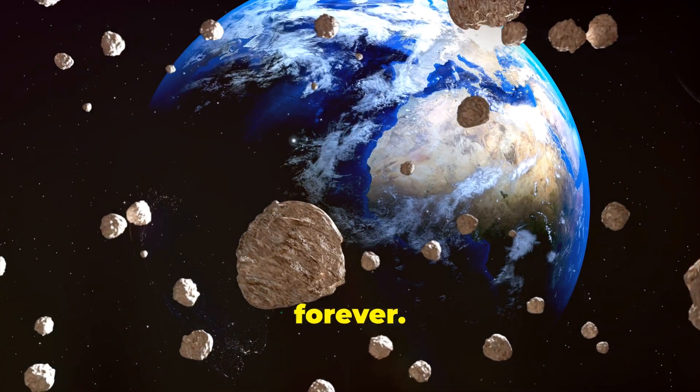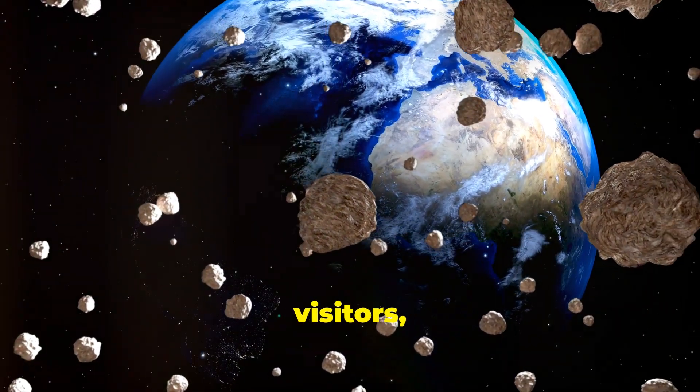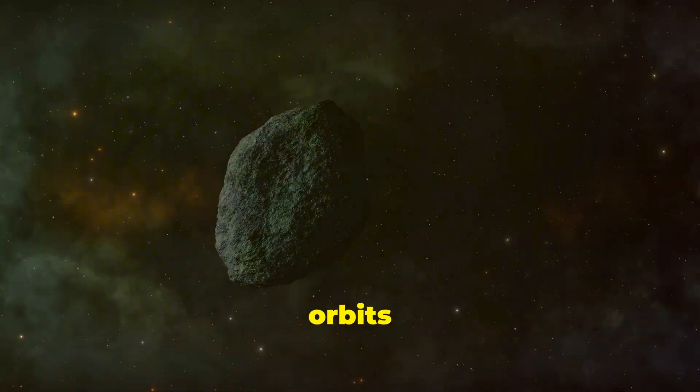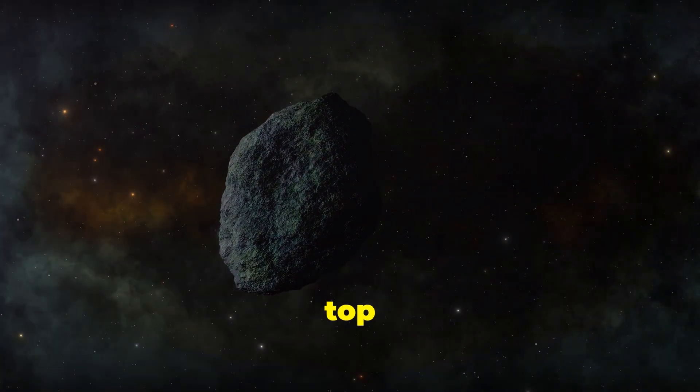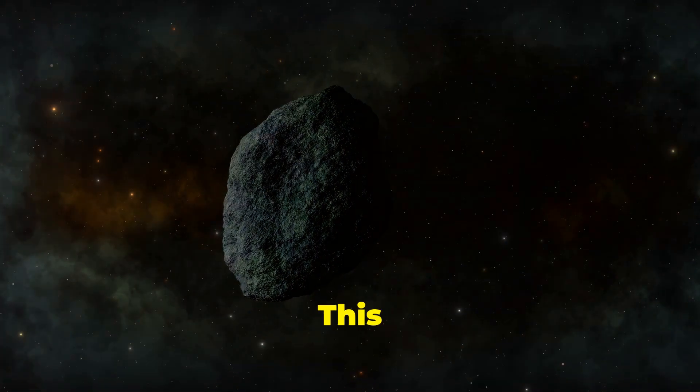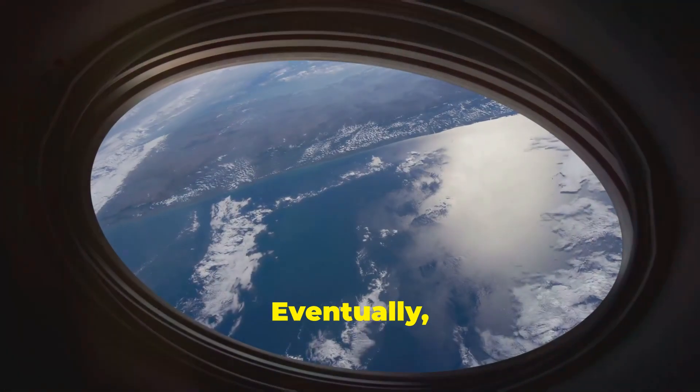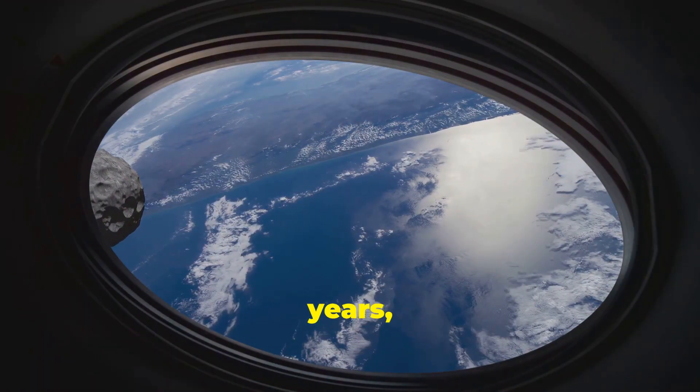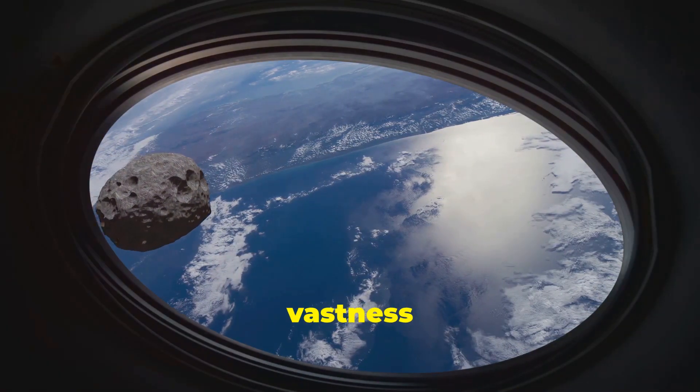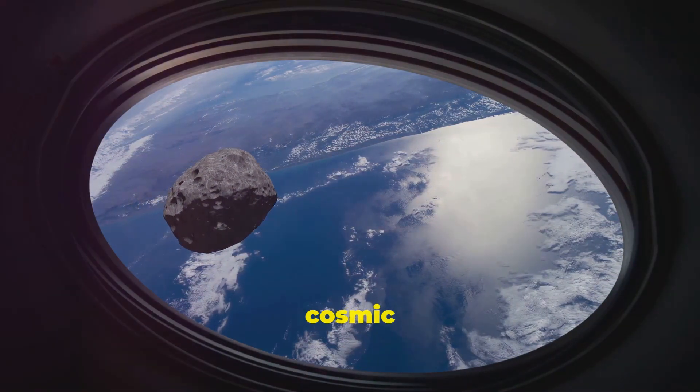These captured asteroids are temporary quasi-moons. They don't stick around forever; they are like cosmic visitors here for a short stay. Their orbits are usually unstable, like a spinning top that's about to topple over. This instability means they can't maintain their position for long. Eventually, after a few months or even years, they're flung back out into the vastness of space.